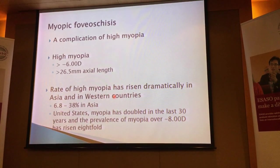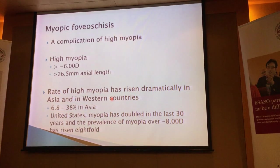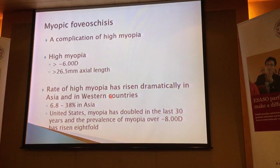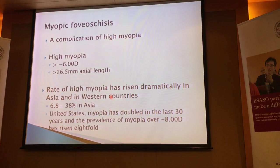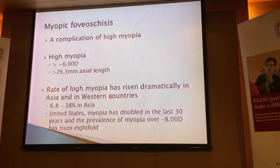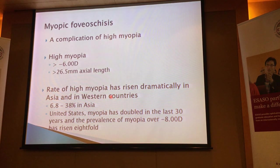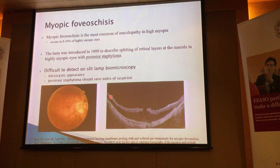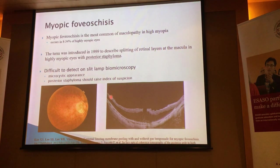We don't really know why. For example, in Asia now, the proportion of high myopes in certain populations has been quoted to be as high as 38%. In the United States as well, it's been reported that the myopia rate has doubled just over the last 30 years, and the prevalence of myopia over minus 8 diopters has risen by at least 8 times. That's a huge number that we'll be dealing with in the very near future.